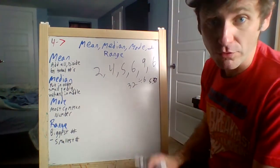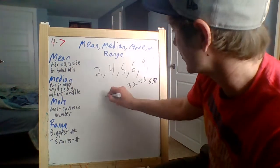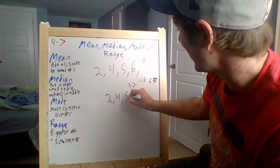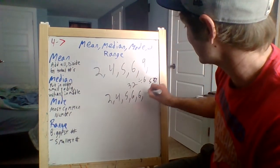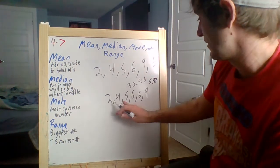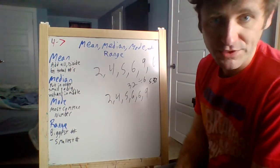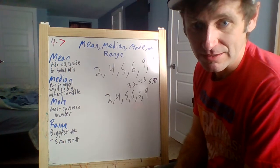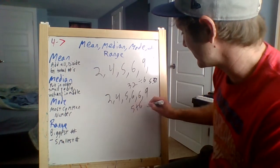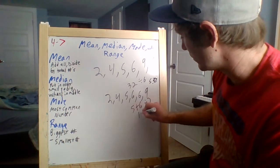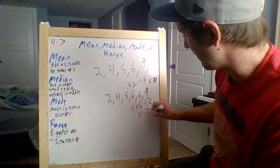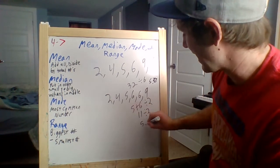Our median: put them in order. They're almost in order, but they're not quite. So let's go 2, 4, 5, 6, 6, and 9. What's in the middle? 5 and a 6. So we've got to do 5 plus 6 divided by 2. 11 divided by 2 is 5.5—that's our median.